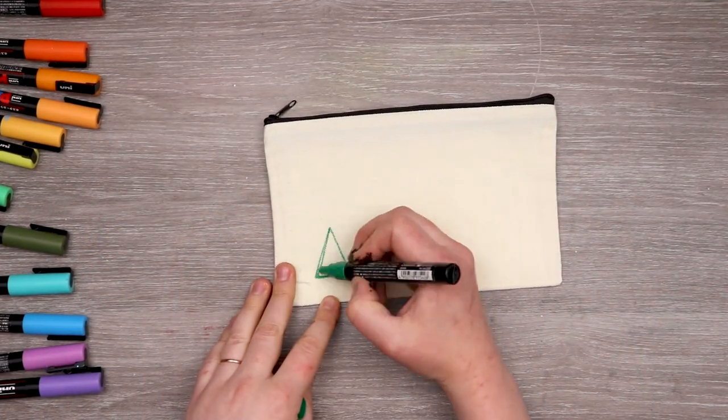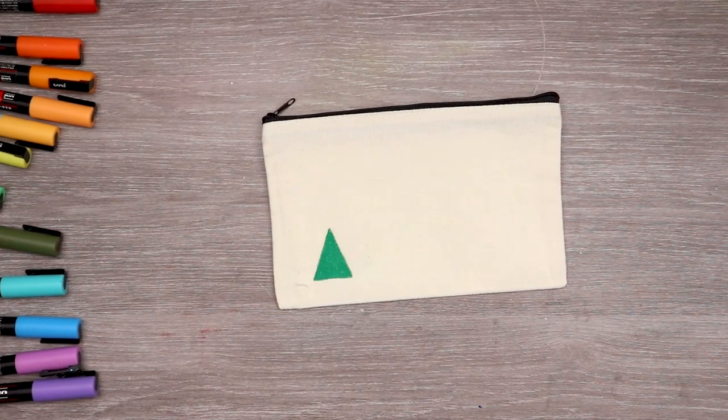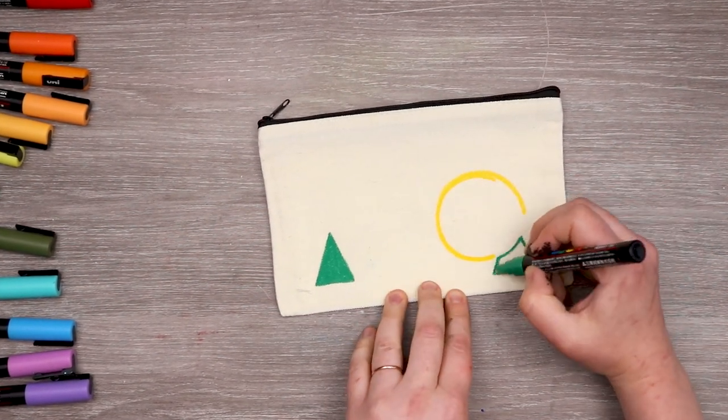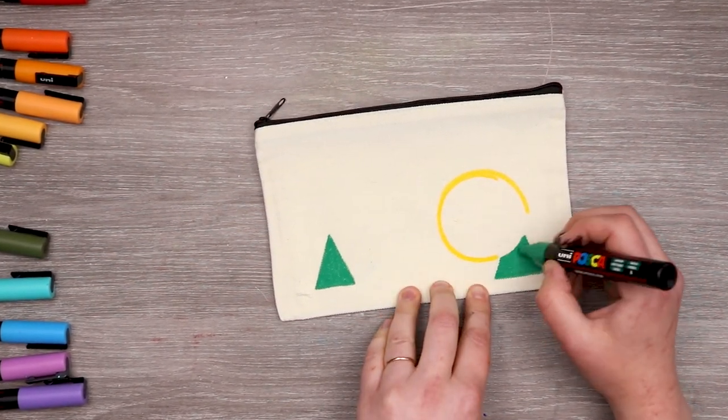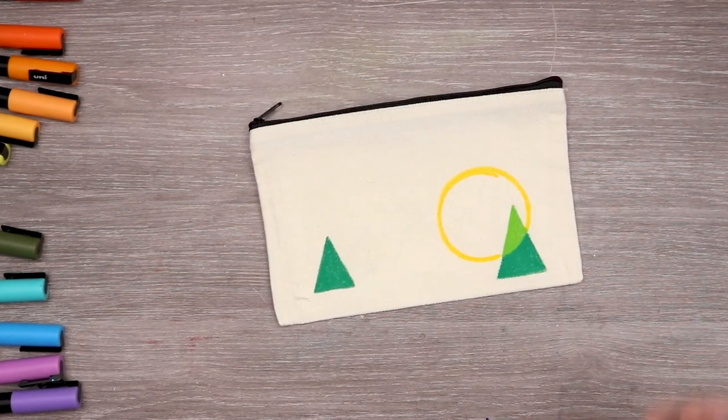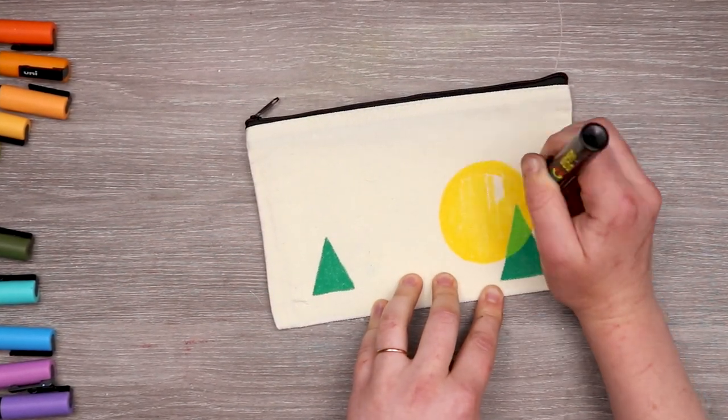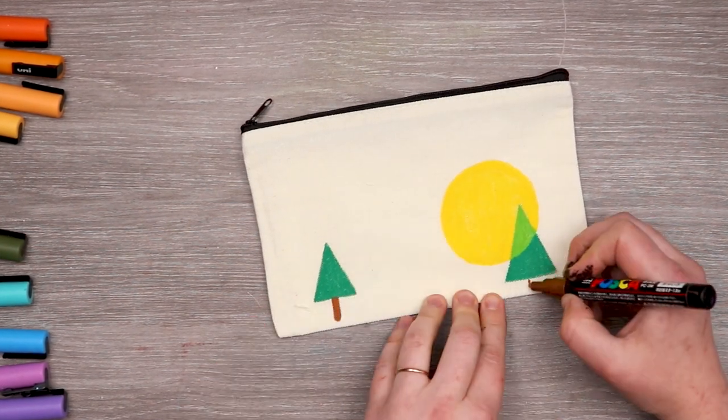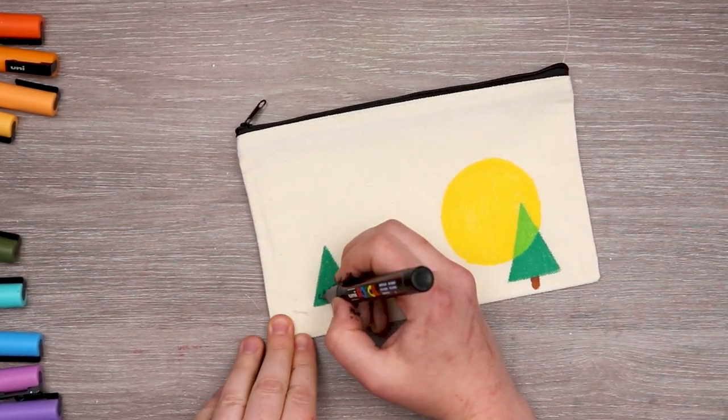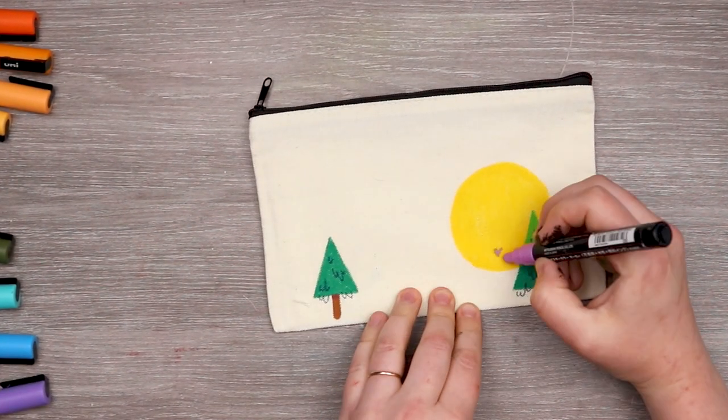So moving on to our smaller pencil bag I wanted to again create pretty much the same sort of scene where we have some trees overlapping and a big kitty. I did have to change the color of the cat because I did not want to struggle with that black again. The black was basically dead so I moved on to a dark blue but again it was dying.